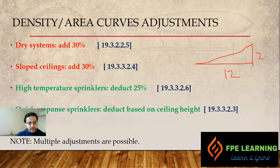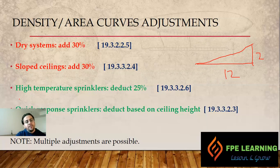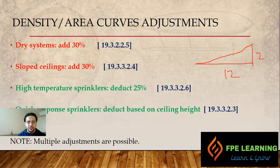The third scenario is high temperature sprinklers, highlighted in green because here we can deduct 25 percent as per NFPA 13 Section 19.3.3.6. The reason is that high temperature sprinklers activate fewer sprinklers compared to ordinary temperature sprinklers. Keeping that in mind, we can reduce 25 percent from our design density areas.